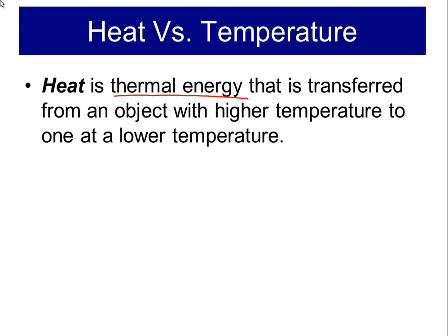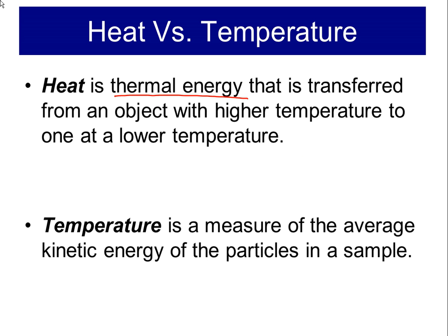For example, if container A has a high temperature next to container B at a lower temperature, the energy being transferred from A to B is what we call heat — that energy transfer. Temperature, on the other hand, is a measurement of the average kinetic energy of particles in a sample. So heat is thermal energy being transferred between objects, while temperature is just a measurement of the average kinetic energy — the average speed of those particles moving in that sample. That's the difference between heat and temperature.